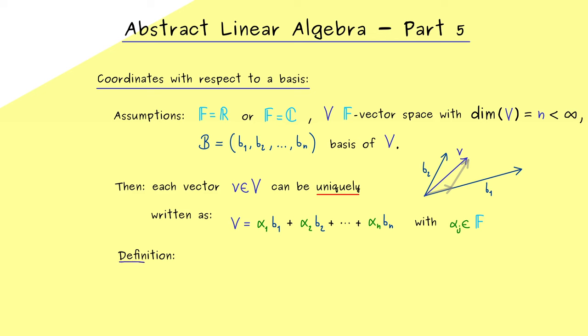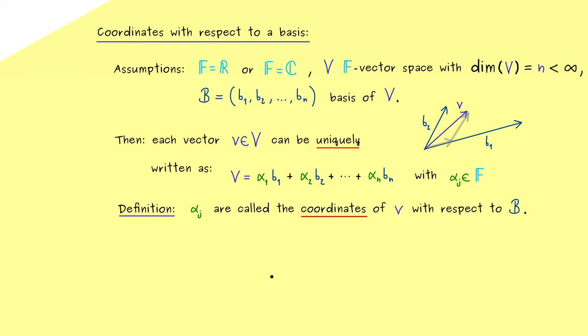And with that we already have our first definition here. These real or complex numbers are called the coordinates of v. More precisely these are the coordinates of v with respect to the given basis B. This means if you fix a basis B you can write down any abstract vector v just with ordinary numbers from R or C. And obviously this immediately helps us for calculations.